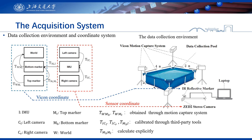Second, the sensor coordinate system, including the camera coordinate system and IMU coordinate system. The transformation between the camera and IMU and the transformation between IMU and the bottom marker are calibrated through third-party tools, while the transformation between the two sets of markers is obtained by explicit calculation.